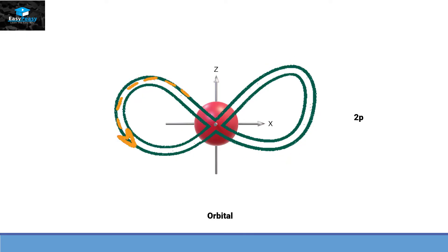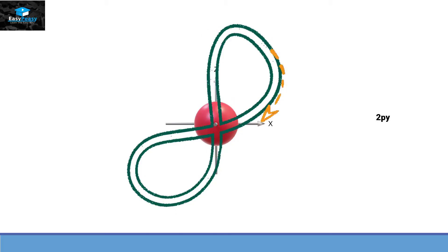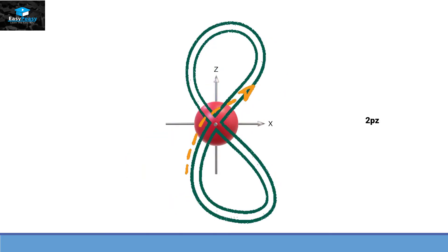The movement of an electron in a dumbbell shape is called an orbital. In the P subshell we have three different types of orbitals. The movement can be along the X axis — that is 2Px; it can be along the Y axis — 2Py; or it can be along the Z axis — 2Pz.